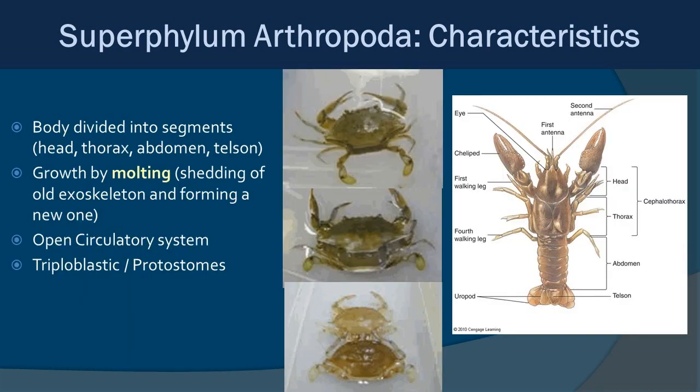The arthropod body is generally divided into segments: the head, thorax, abdomen, and telson, as diagrammed with the lobster on the right. Because their exoskeletons are hard and no longer living, all arthropods must go through a molting process — shedding their old exoskeleton and forming a new one to get larger. The blue crab pictures show it exiting its exoskeleton. New exoskeletons are initially very soft; the animal blows itself up with water to get bigger before the shell hardens.